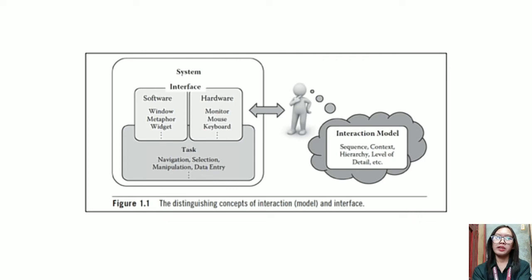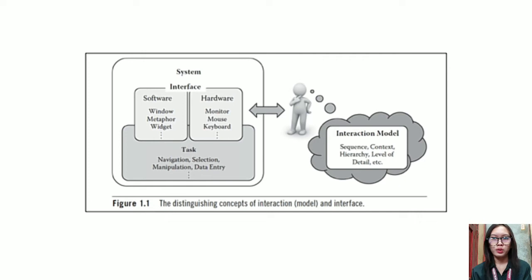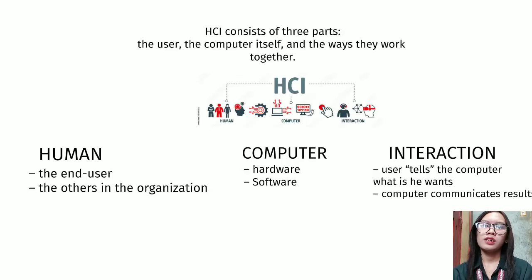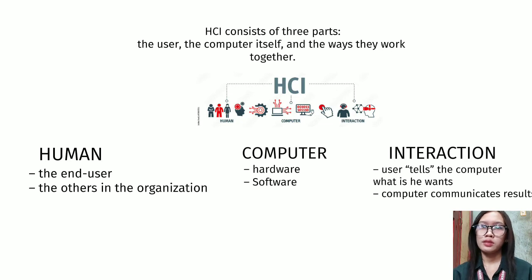The interface has two classifications: software and hardware. Software involves window metaphor and widgets, while hardware involves the monitor, mouse, and keyboard. Their tasks include navigation, selection, manipulation, and data entry. HCI consists of three parts: the human, the computer, and the ways they work together.